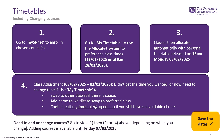We then move into step four, the class adjustment phase. If you didn't get the time you wanted, or need to change times or courses, go back to My Timetable — you can swap to other classes if there is space, or add your name to a wait list. If you have unavoidable clashes, you can contact the faculty timetable team at eait.mytimetable@uq.edu.au.